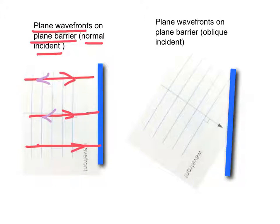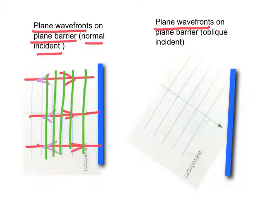The wave will be reflected in the opposite direction. Therefore, the reflected wave fronts will be parallel. What happens if the plane wave fronts are incident on the plane barrier at an angle? That means oblique incidence for the plane.